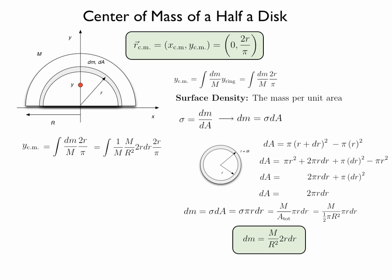Replacing dm we get 1 over m times m over R squared times 2 r dr times 2 r over pi. Canceling the mass of the disk.